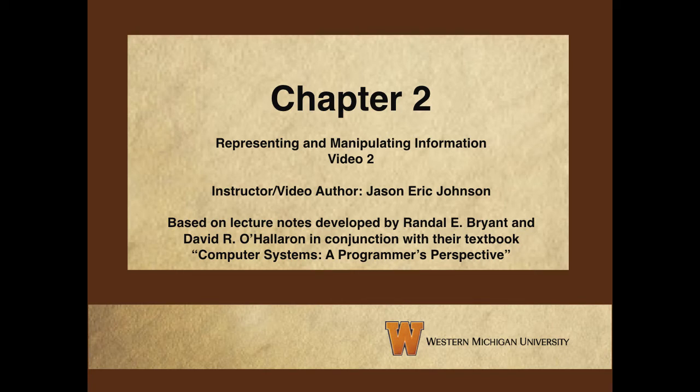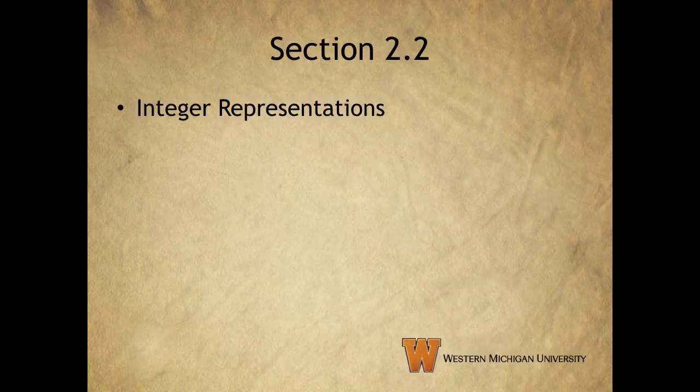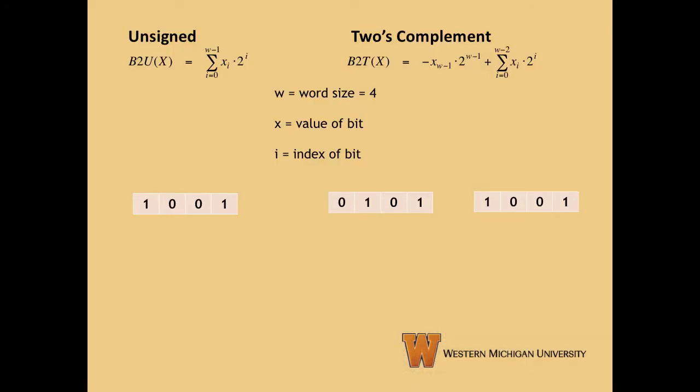This is video number two covering chapter two of your computer systems textbook. This video will cover section two of chapter two. We'll talk about unsigned and two's complement integer representations. These functions show how to translate groups of bits into unsigned and two's complement integers. We'll look at some examples to illustrate what these functions mean.